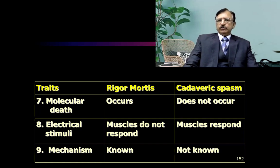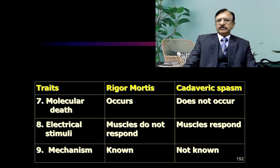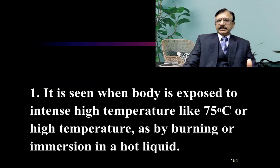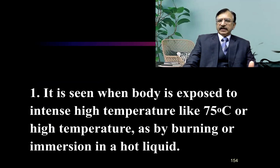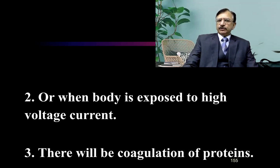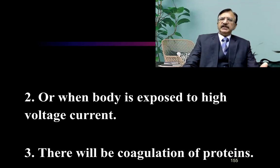The mechanism of rigor mortis involves a chemical change causing stiffening of the muscles, whereas the mechanism of cadaveric spasm is not known. Now, heat stiffening: this is seen when the body is exposed to extreme high temperatures — like 75 degrees Celsius or higher — burning of the body, or immersion in very hot liquid. In these conditions there will be heat stiffening. When the body is exposed to such high temperatures, coagulation of proteins occurs, causing heat stiffening.